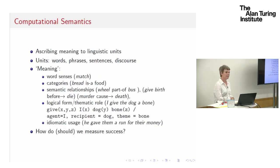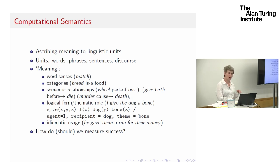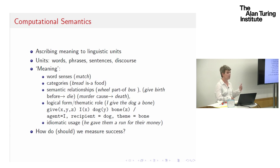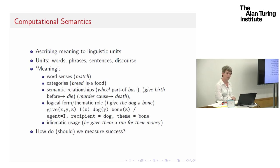In computational semantics, what we're interested in is getting our computer models to ascribe meaning to linguistic units. Those linguistic units could be words — we're also interested in subwords — and we're also interested in building up models for meaning at the phrase, sentence, and discourse level.